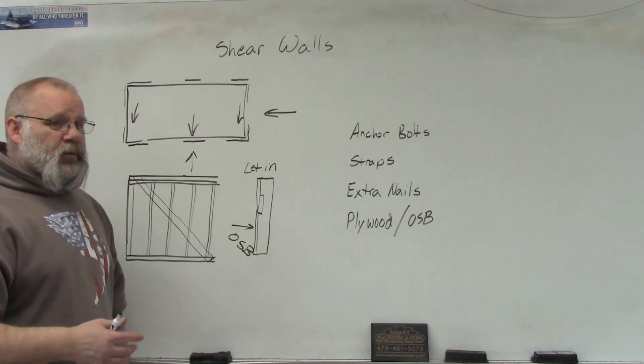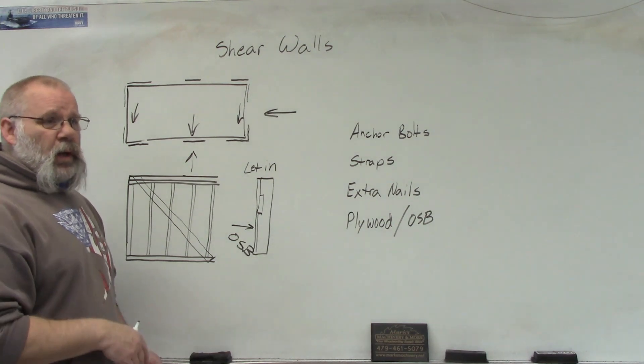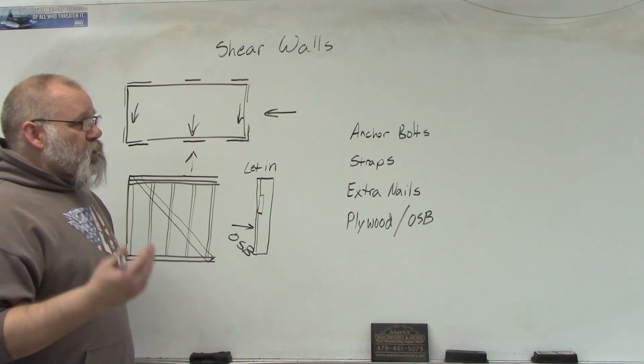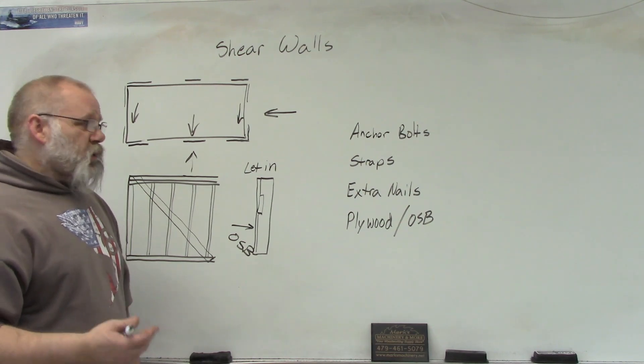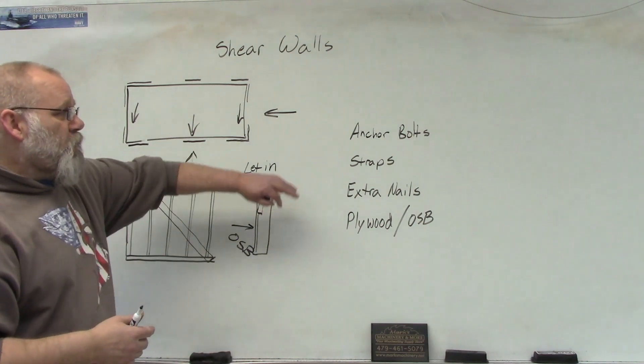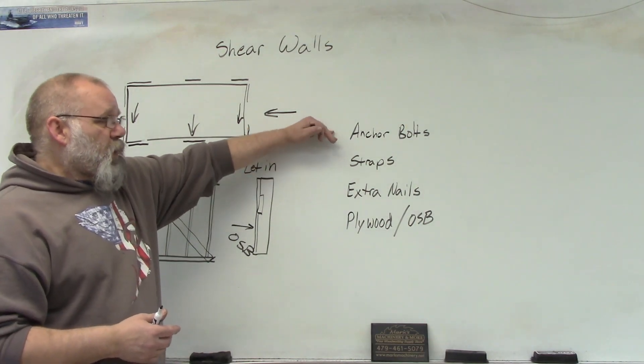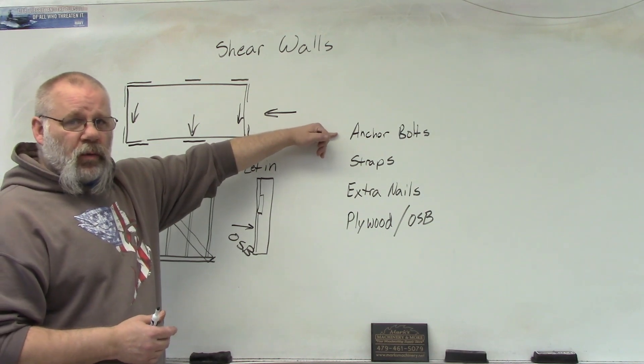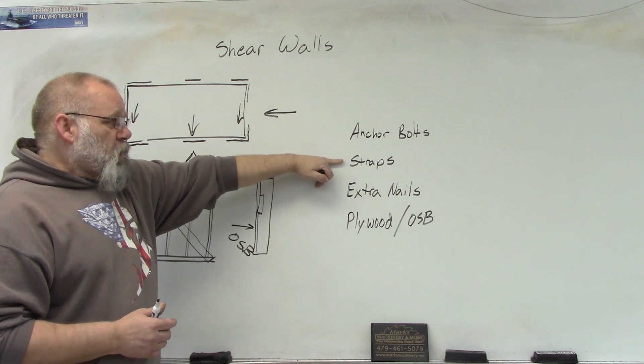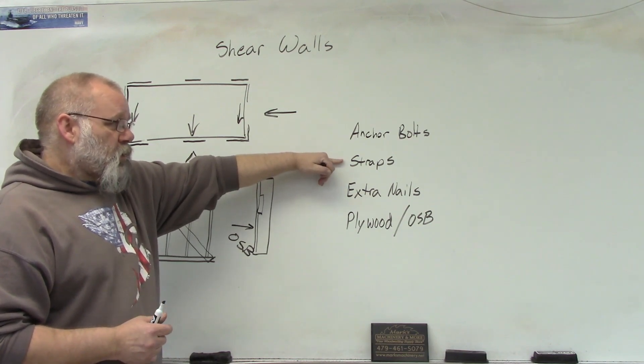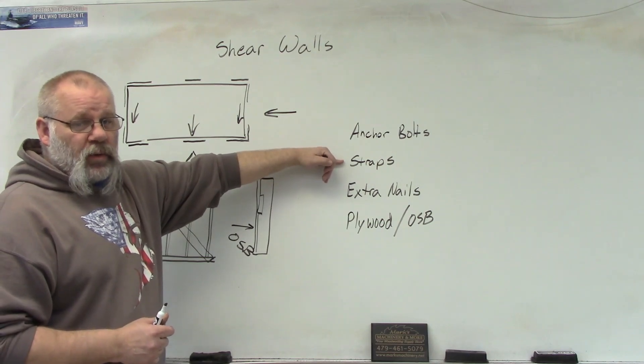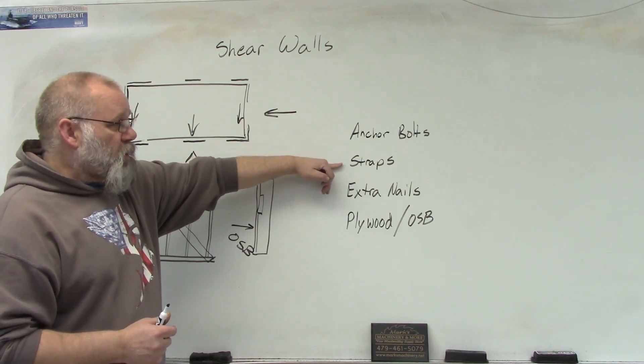Now, some places like California that has a lot of earthquakes or along the coast where you have a lot of hurricanes, there's a lot more to the shear walls than just adding plywood to the outside. Some of the things that they would do is they would add anchor bolts so that there would be more anchor bolts on those corners to help tie them down. Some of them, if there's like in California or something, they have codes that you have to strap them down.